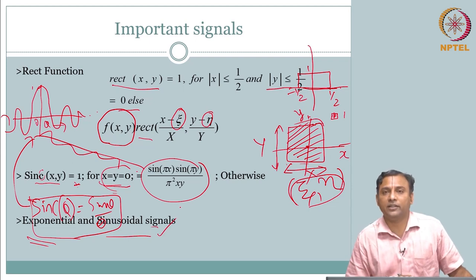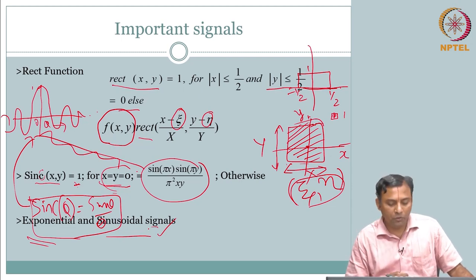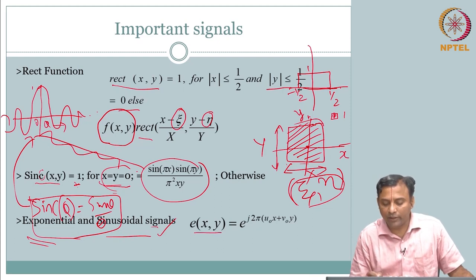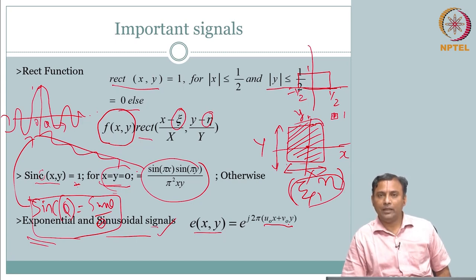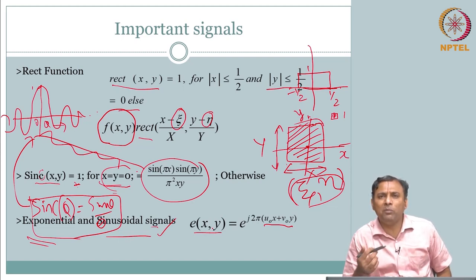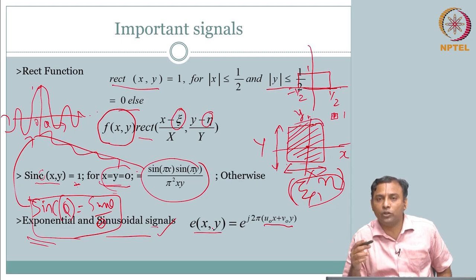We need to understand what sinusoids and exponentials are. You may know the formulation — the relationship between exponential and sinusoid. In 1D, the exponential function is e^(j2πft), where omega equals 2πf. This is what you would have already seen. So if you extend that analogously to 2D, instead of t you have x and y, and instead of 2πft, t is replaced by the spatial variables.